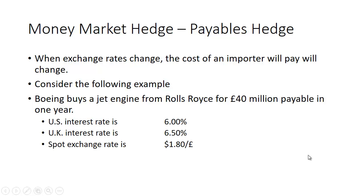Now let's take a look at a payables hedge. In this case, suppose Boeing buys a jet engine from Rolls-Royce for 40 million pounds, payable in one year. The US interest rate is 6%, the UK interest rate is 6.5%, and the spot exchange rate is $1.80 per pound.